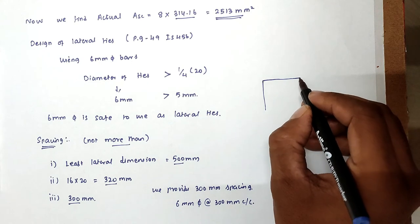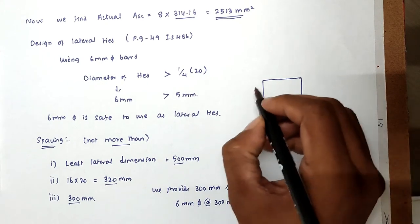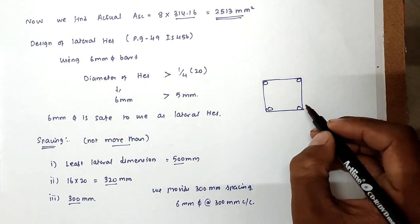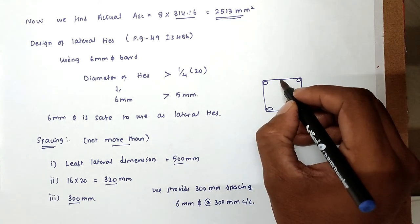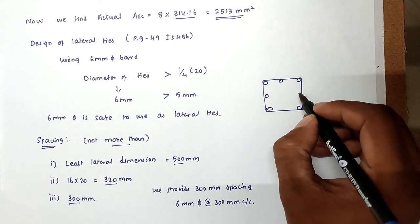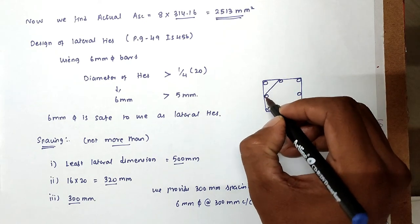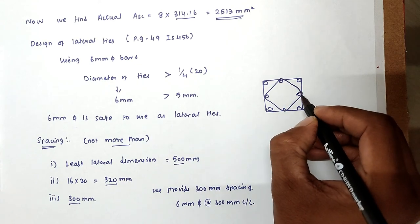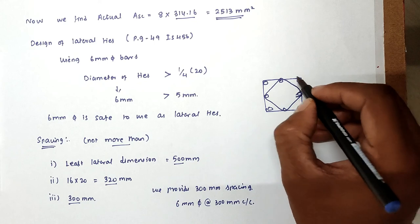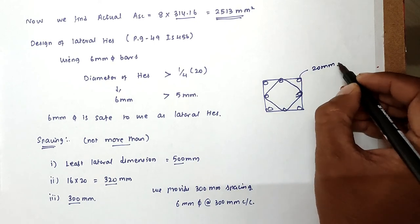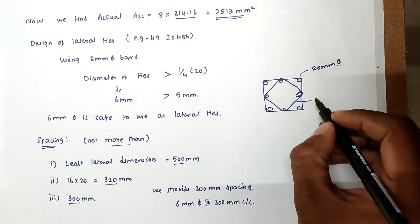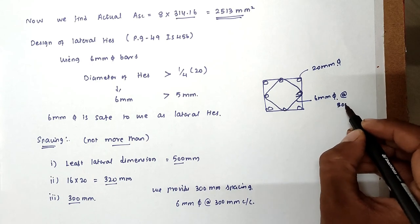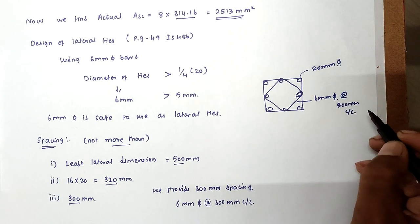So 6mm diameter bars at 300mm center to center. So this is the method we can design the square column with 8 bars, four bars common and we can provide extra four. And lateral ties. The dimension will be 500mm. This is 20mm diameter bars, this one 6mm diameter bars, spacing at 300mm center to center.